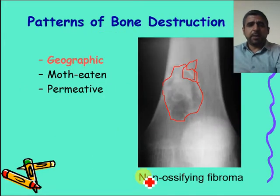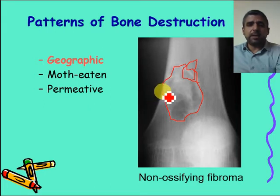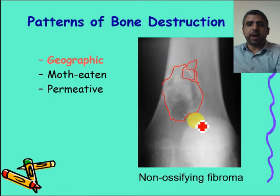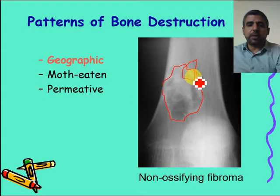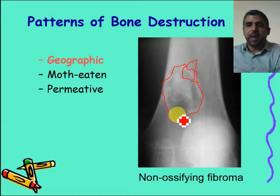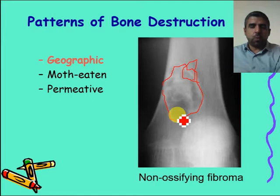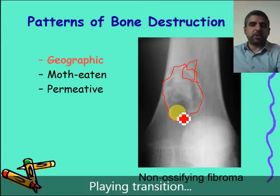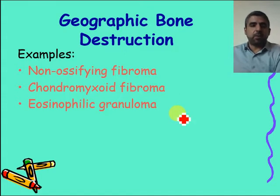For example, this lesion here is a non-ossifying fibroma — a benign bone lesion. You can see a very narrow zone of transition; it's extremely well-defined. This encircled area is very sharp and well-defined. This is what we mean by geographical type of bone destruction. The top three differentials for a geographical lesion are non-ossifying fibroma, chondromyxoid fibroma, and eosinophilic granuloma.